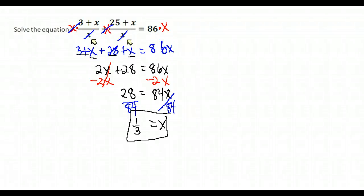We reduce 28 over 84 because 28 goes into 84 three times, giving us one-third as our solution. Go back and verify that one-third does not make any denominator zero — it doesn't; it makes both denominators one-third, which is perfectly fine.